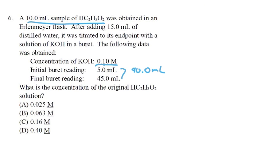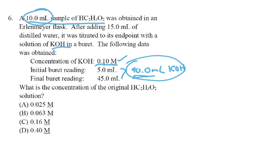Question 6: A 10 mL sample of acid is titrated to its endpoint with 0.1 M KOH added from a burette. The burette starts at 5 mL and ends at 45 mL, so I used 40 mL of KOH. I had a 10 mL sample of acid and had to use 40 mL of base — four times as much — so my acid must be four times more concentrated than my base. Since the base is 0.1 M, the acid must be 0.4 M.